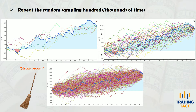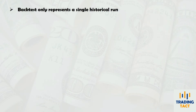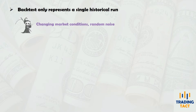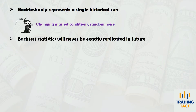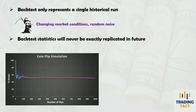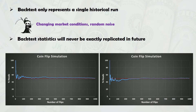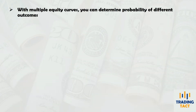Every backtest, no matter how reliable, only represents a single run of your strategy over a certain historical period. Because of changing market conditions and the presence of random noise in every price dataset, your backtest statistics will never be exactly replicated in future. It's like flipping a fair coin 100 times and getting 53 heads — if you flip it another 100 times, you are unlikely to get exactly 53 heads again. By simulating multiple equity curves, Monte Carlo lets you determine the probabilities of obtaining different backtest outcomes.